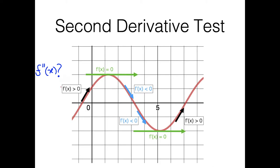Let's quickly revisit what the second derivative actually tells us. The second derivative is basically going to be the instantaneous rate of change of the first derivative. So let's see if we can use the first derivative's information to make a conclusion about the second derivative around each of those extreme values.